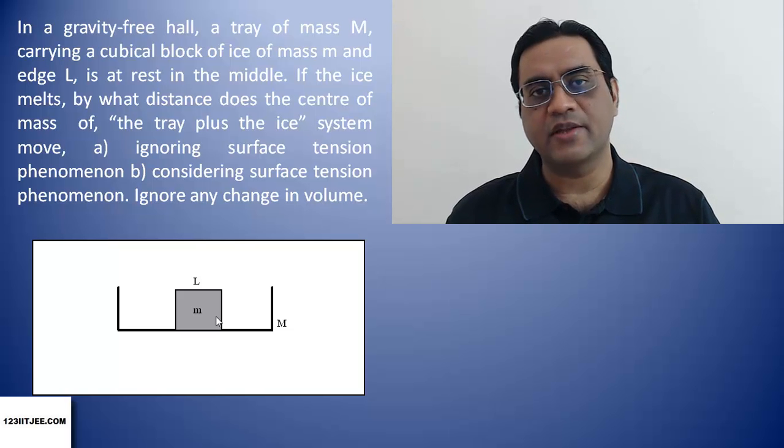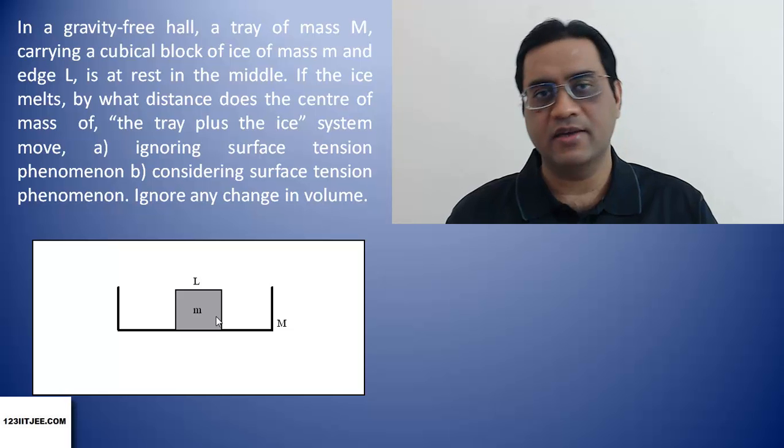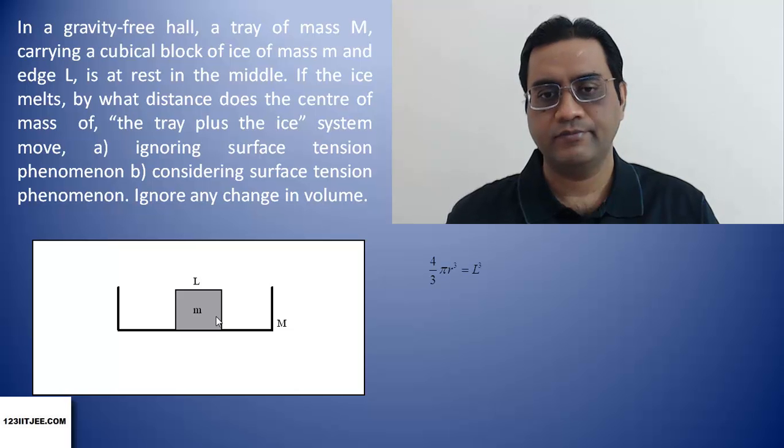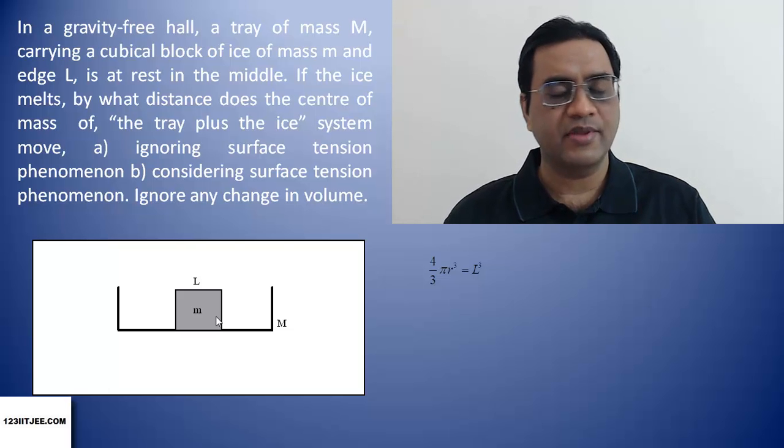If surface tension is considered, then the cubical block would become spherical in shape. The volume of the sphere would be equal to the volume of the cube. The radius comes out to be around 0.6 times capital L or the diameter would be around 1.2 times capital L.